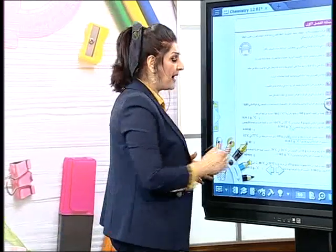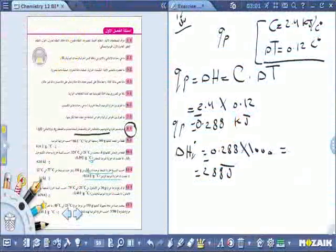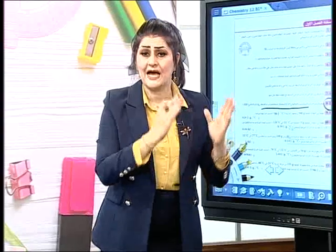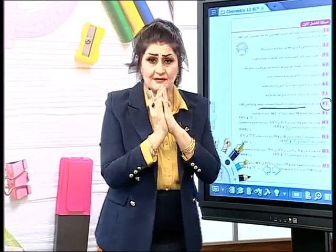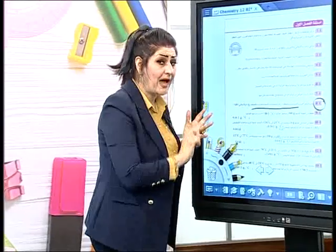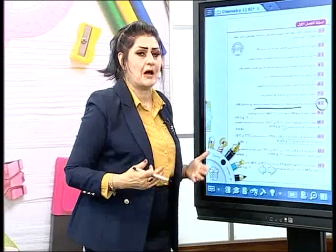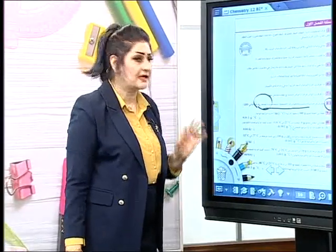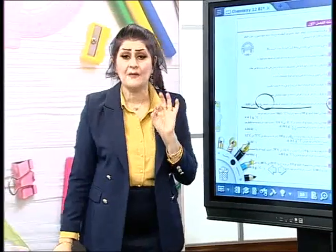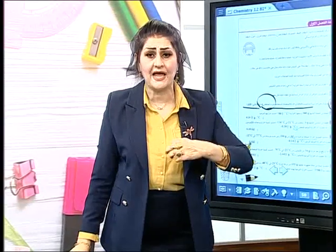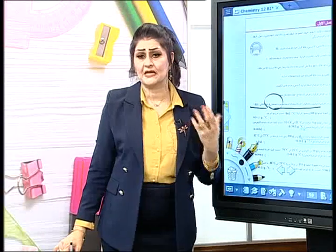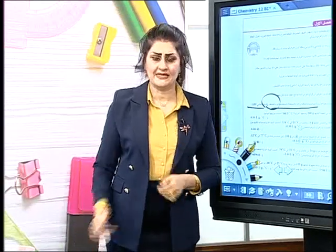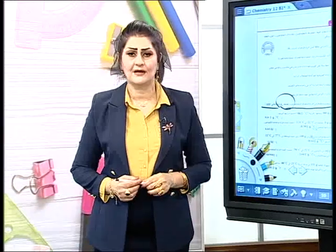يُستخدم المسعر لقياس الحرارة المنبعثة أو الممتصة. ممكن يقيس تفاعل ماص للحرارة أيضاً. لازم يكون تحت ضغط ثابت حتى أقيس الإنثال. دائماً أريد النتيجة لمول واحد - إذا وضعت كمية معينة من المولات، أستخرج لمول واحد، وإذا أريدها لمولين أضرب في 2.